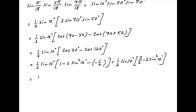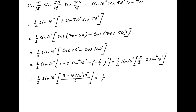This can be rewritten as 1 upon 2 times sine 10 degrees times, in brackets, 3 minus 4 times sine squared 10 degrees, divided by 2, which is equal to 1 upon 4 times, in brackets, 3 times sine 10 degrees minus 4 times sine cube 10 degrees.